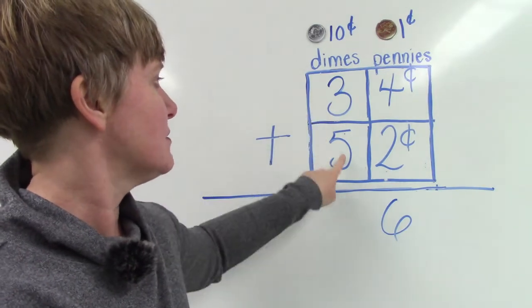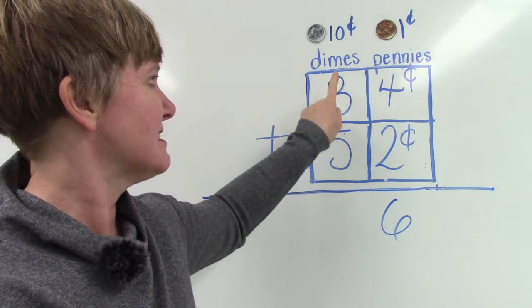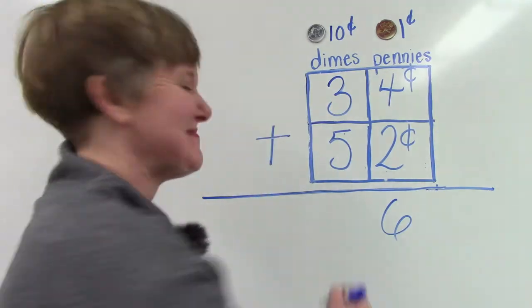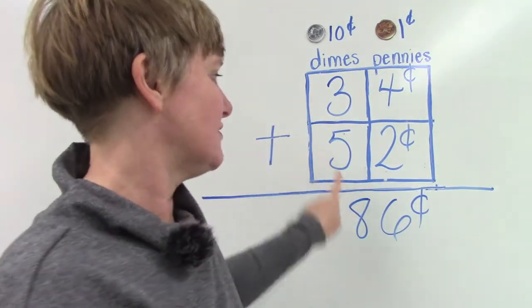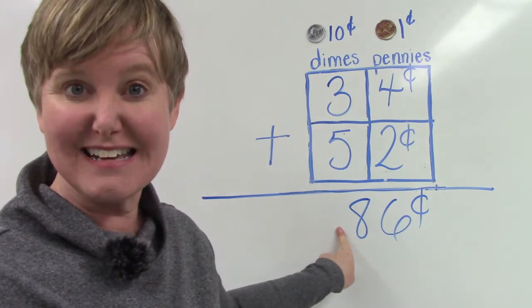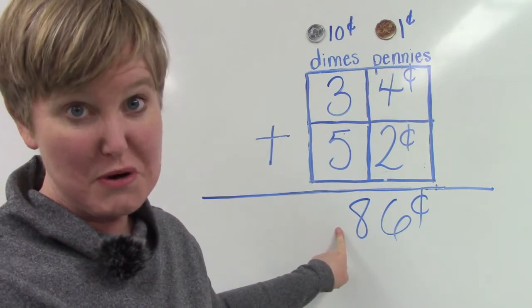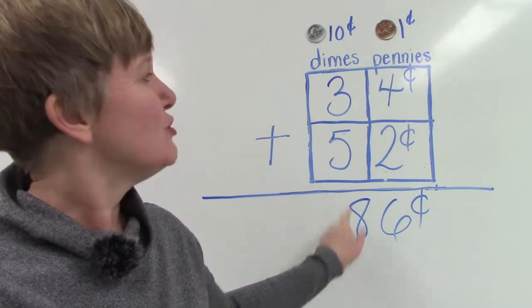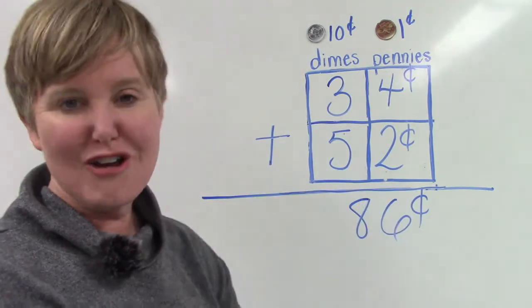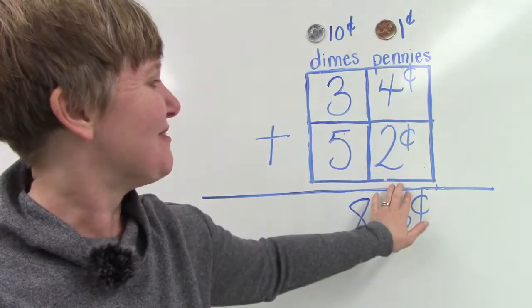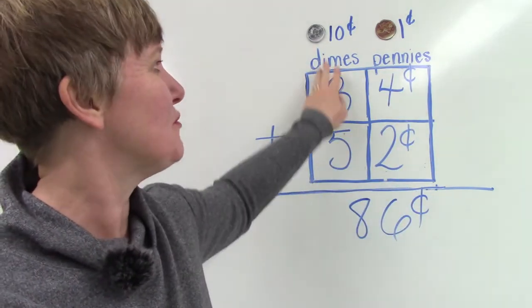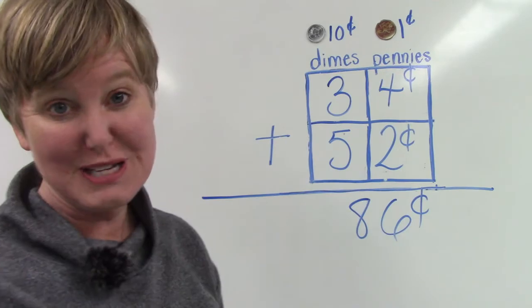And then we come over to our tens place or the dimes column. We have five plus three. Five, six, seven, eight. Thirty-four cents plus fifty-two cents is eighty-six cents. It's very important for you to remember to add the numbers together in your column. We start in the ones place or the pennies column and then we move over to the tens place or the dimes column.